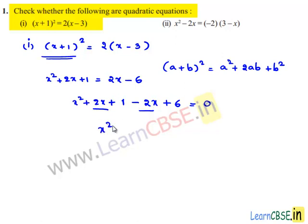So we have x², and we don't have any x coefficient term, and 1 + 6 becomes 7, so this is equal to 0. The final equation is x² + 7 = 0.